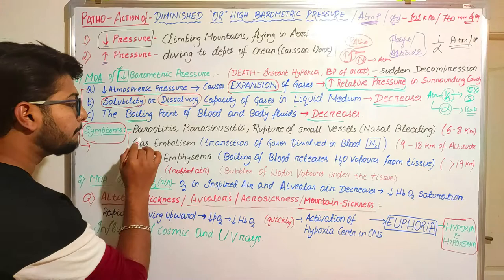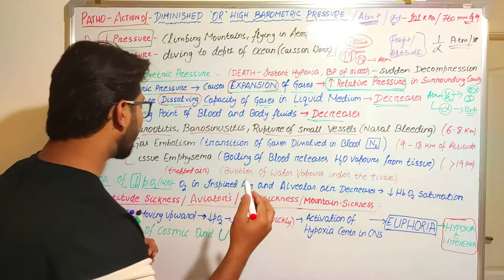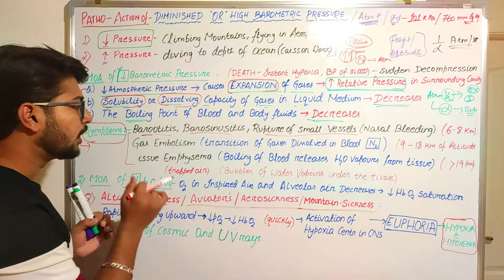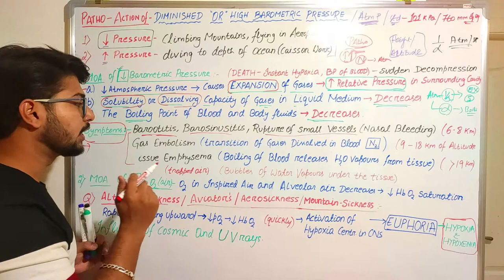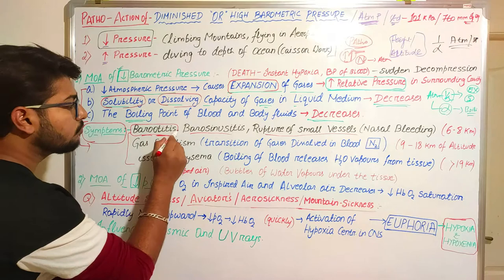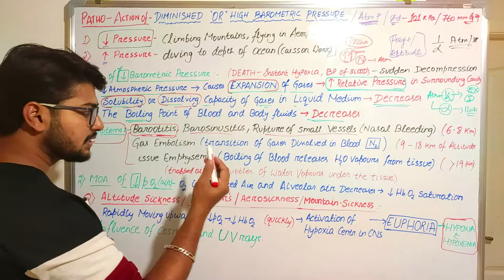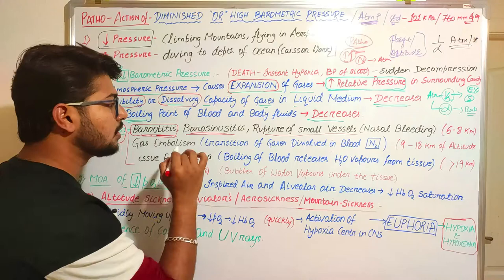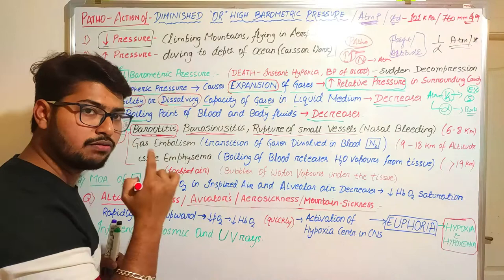What are these symptoms? It will lead to barotitis, barosinusitis, and rupture of small vessels. Barotitis means that due to change in pressure in our ear, there will be inflammation of the ear — otitis means inflammation of the ear. There will also be barosinusitis — inflammation of the frontal sinus. And there will be rupture of small vessels, mostly causing nasal bleeding.